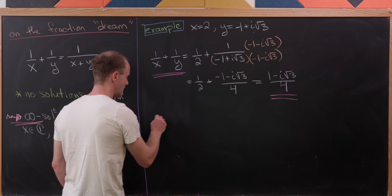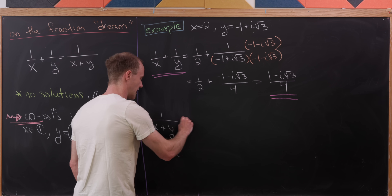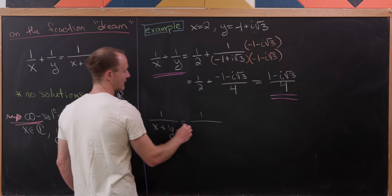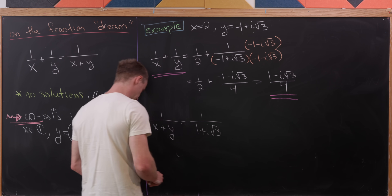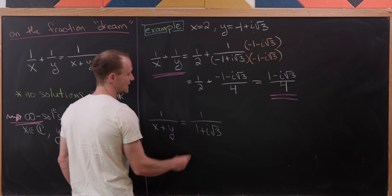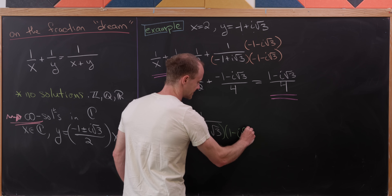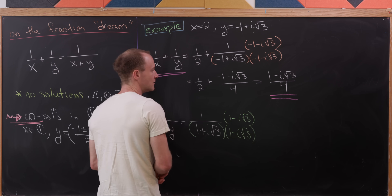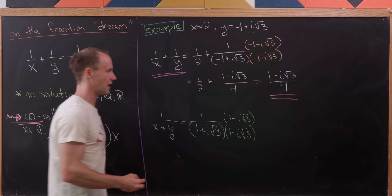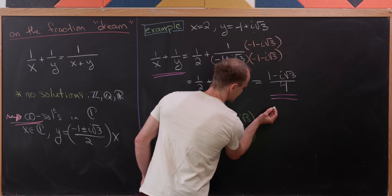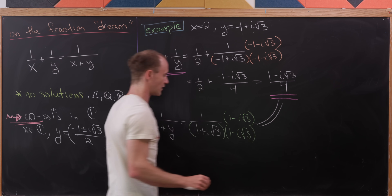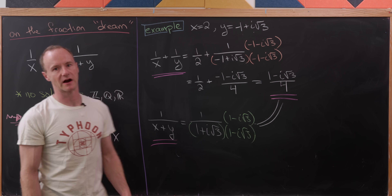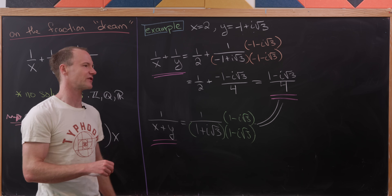Now let's compare that with 1/(x+y). Adding x and y gives 1 + i√3, so we have 1/(1 + i√3). Multiplying by the complex conjugate (1 - i√3)/(1 - i√3), we get (1 - i√3)/4 in the numerator and 4 in the denominator. This matches, as expected since this is one of our infinitely many solutions.